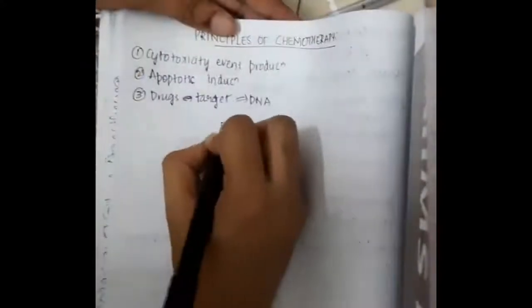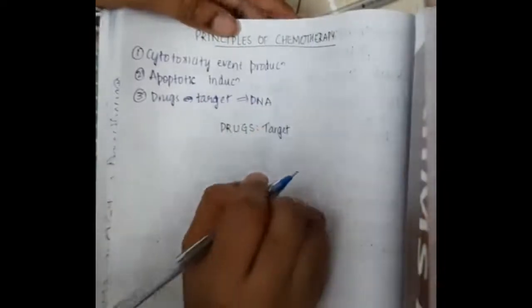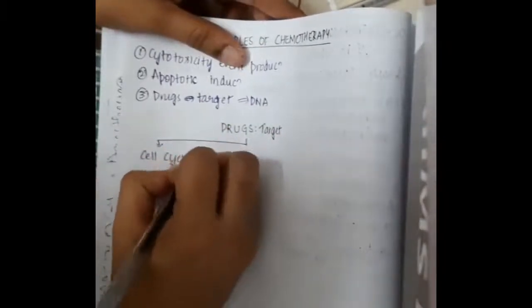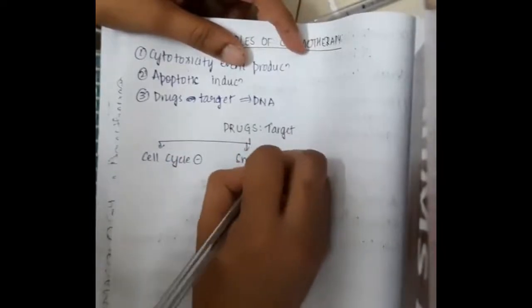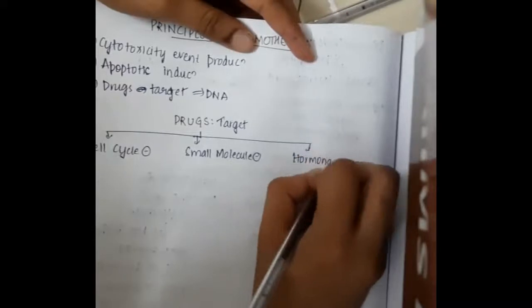Now if you see the drugs, the targets of these drugs are mainly three types. We have cell cycle inhibitors, small molecular inhibitors, and hormonal inhibitors.